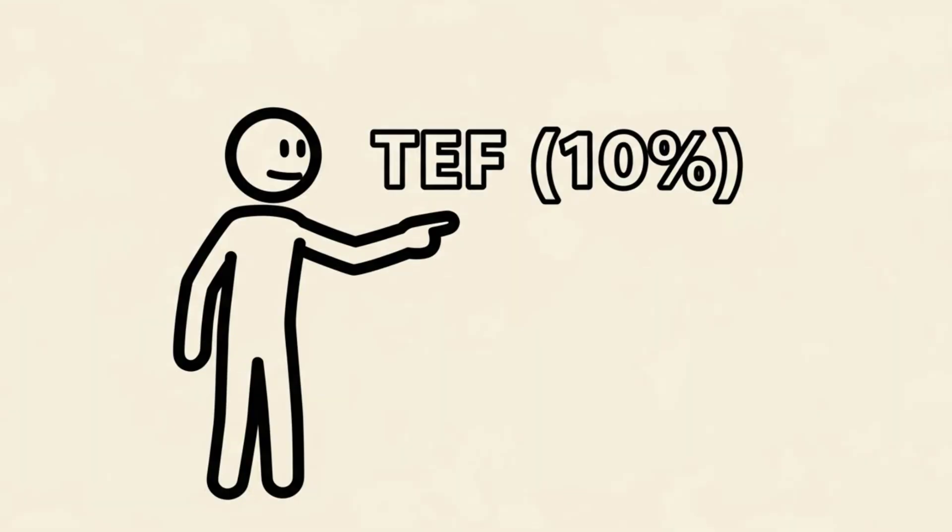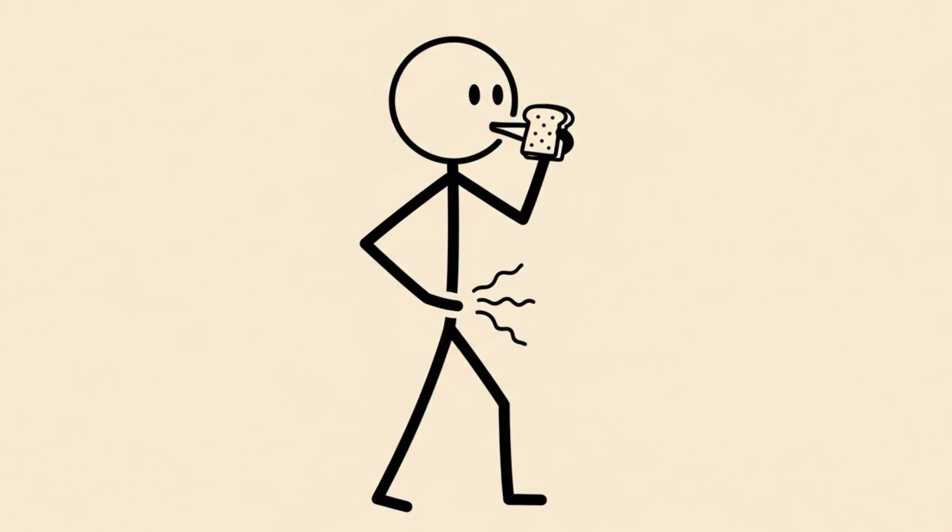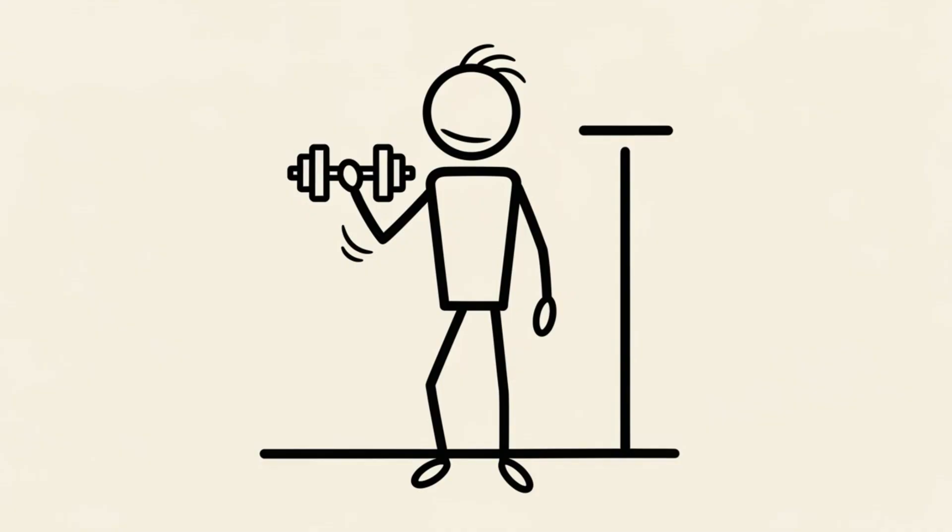Third is TEF, the thermic effect of food. This is about 10%. Your body burns calories just to digest the food you eat. And finally, the smallest slice of the pie, only about 5%, is ET, exercise activity thermogenesis. That implies your gym session.